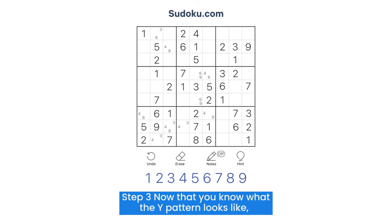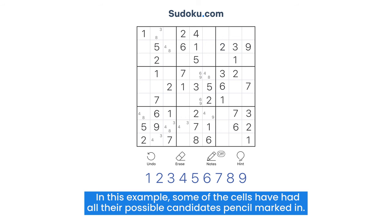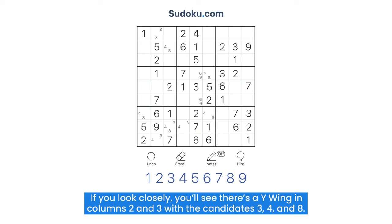Step 3: Now that you know what the Y-pattern looks like, let's take a look at how it can solve Sudokus with the example puzzle. In this example, some of the cells have had all their possible candidates pencil marked in. If you look closely, you'll see there's a Y-Wing in columns 2 and 3 with the candidates 3, 4, and 8.